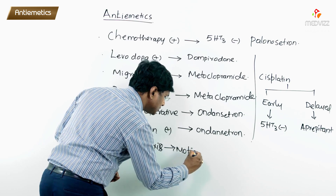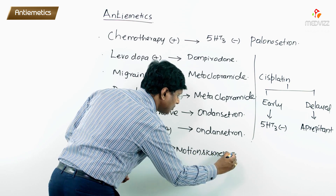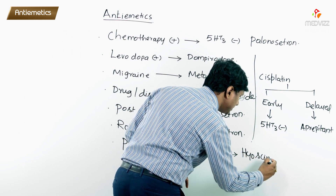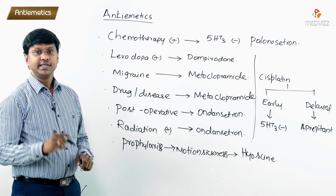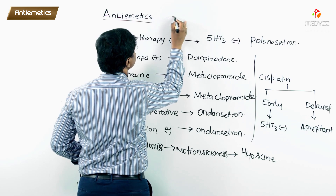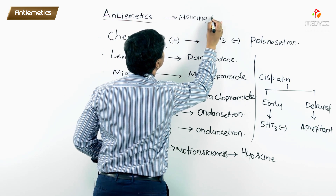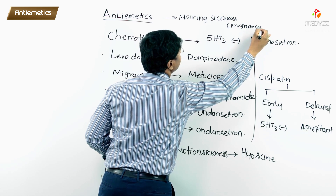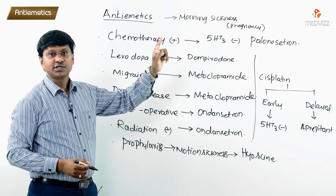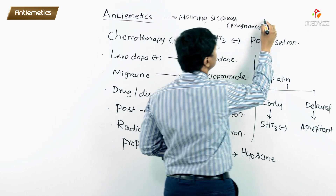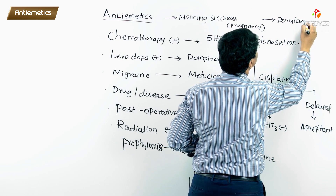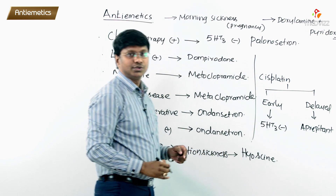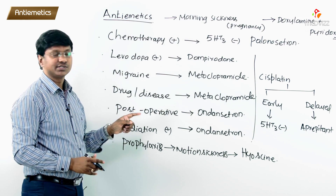For prophylaxis of motion sickness, we give hyoscine butylbromide. In case of morning sickness during pregnancy, the drug of choice is doxylamine plus pyridoxine.